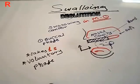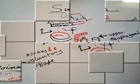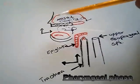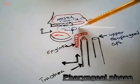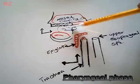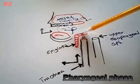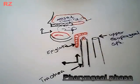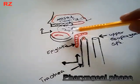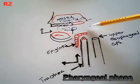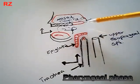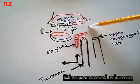Now let's see the pharyngeal phase, which is the most important phase. The pharyngeal phase starts at the end of the buccal phase — when the tongue is moving upward and backward, pushing the food bolus into the pharynx. The buccal phase is one second and voluntary.